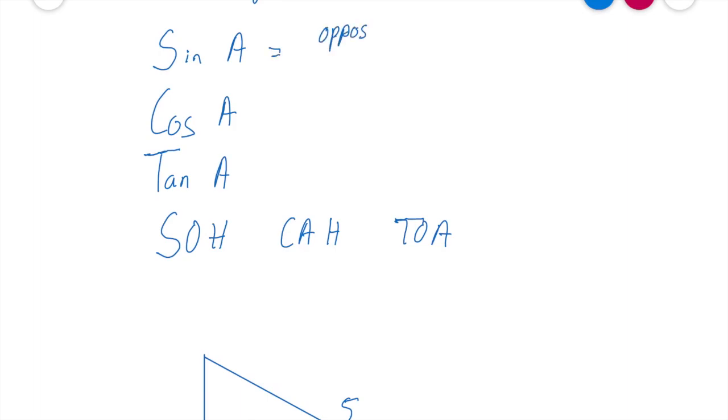So to write that in here, what that means, sine A is equal to my opposite over my hypotenuse. And we're going to be building on this now as we go through each of the different lessons.